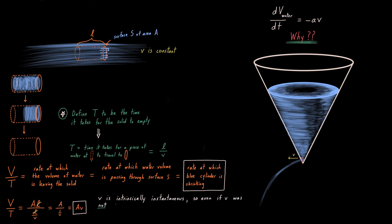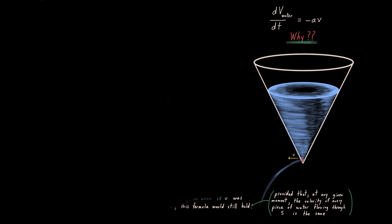Notice, because v is intrinsically instantaneous, even if v was not constant through time, the formula would still hold, provided, of course, at any given moment the velocity of every piece of water flowing through S is the same. In other words, left to right lowercase v can change, but lowercase v velocity can't change vertically in that picture on the top left. So the rate at which the blue cylinder's volume is shrinking is av.